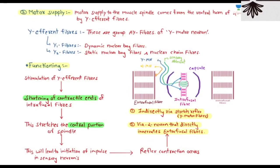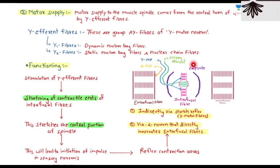The motor supply to the muscle spindle comes from the ventral horn of the spinal cord via gamma efferent fibers. Gamma efferent fibers are divided into gamma 1 and gamma 2 fibers. Gamma 1 fibers innervate dynamic nuclear bag fibers, while gamma 2 fibers innervate static nuclear bag fibers and nuclear chain fibers.